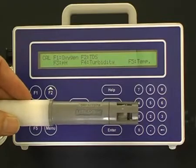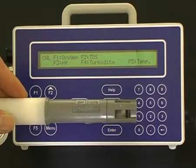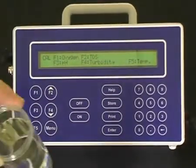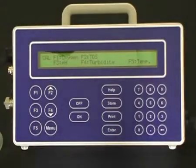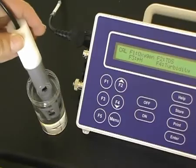The first point for the dissolved oxygen calibration is a zero calibration using the sodium sulfite solution we just prepared. Place the dissolved oxygen sensor in the sodium sulfite solution.